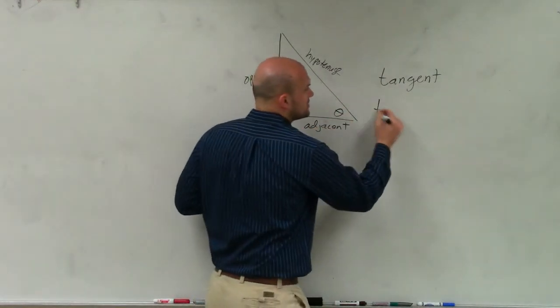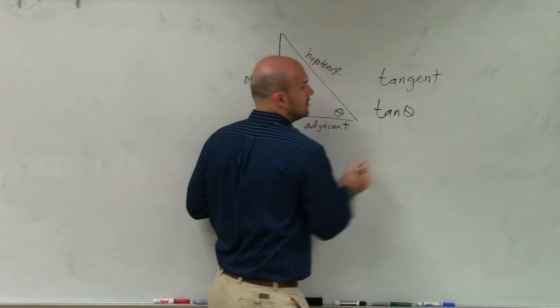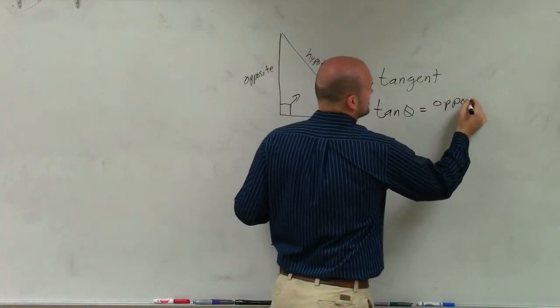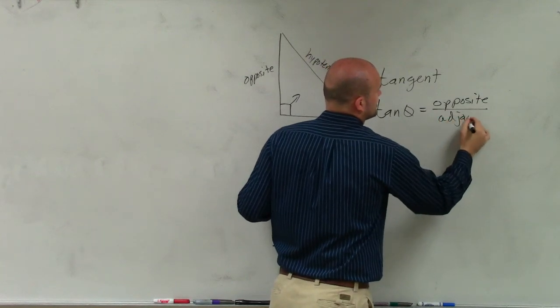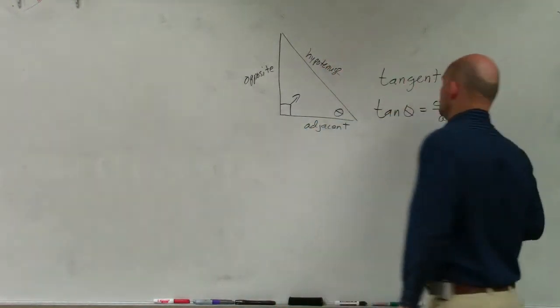So the tangent, which we just call tan of theta, is going to equal your opposite over your adjacent.